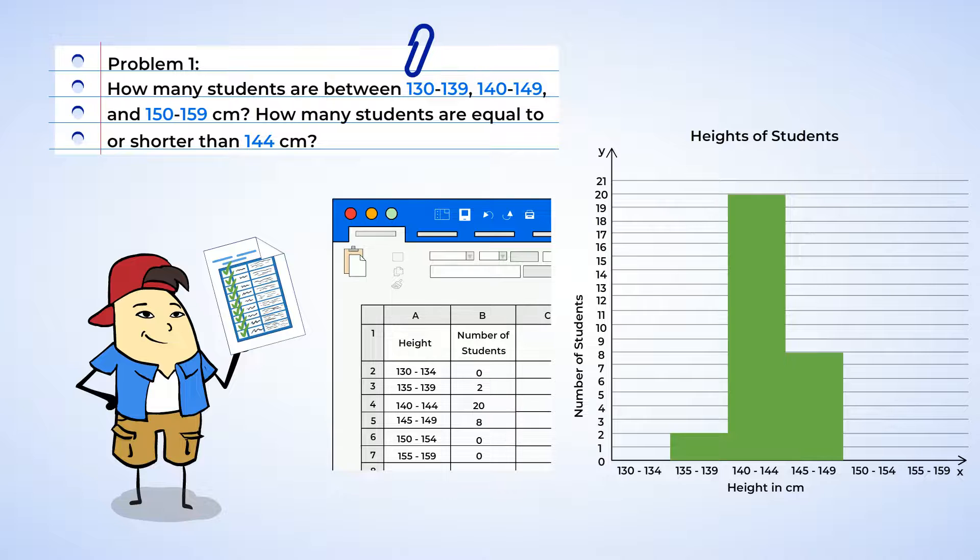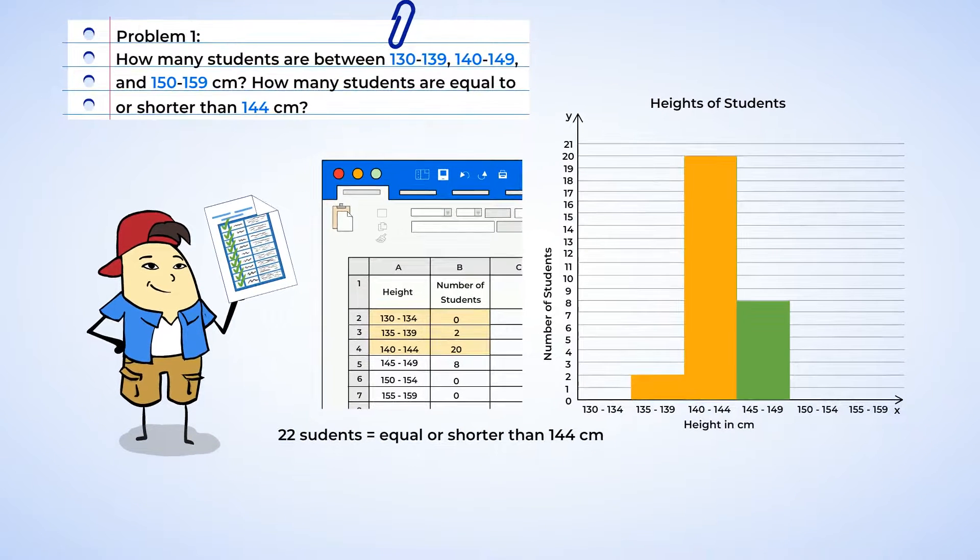Now let's double-check if our histogram shows the answers to Chen's questions. We can easily find the number of heights that are 144 centimeters or less. We can add up all the number of students in the first three bars in the histogram, or 22 students in total.